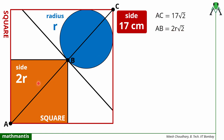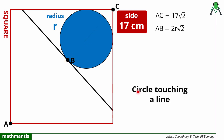Next I will use the property of a circle touching a line. If a circle is touching a line, that line is defined as the tangent of the circle. The property of the tangent is: if we plot the center of the circle and draw a line joining the center to the point of contact where the line touches the circle, this line will always be perpendicular to the tangent.